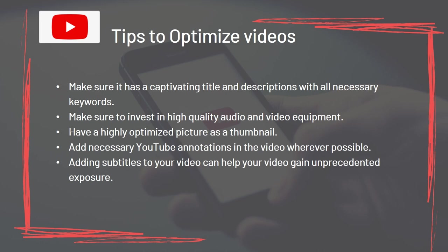Tips to Optimize Videos: Make sure your video has a captivating title and description with all necessary keywords. Invest in high-quality audio and video equipment. Have a highly optimized picture as a thumbnail. Add necessary YouTube annotations in the video whenever possible. Adding subtitles to your video can help it gain unprecedented exposure.